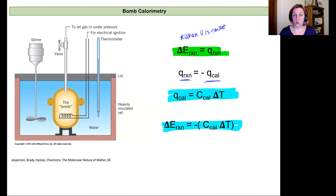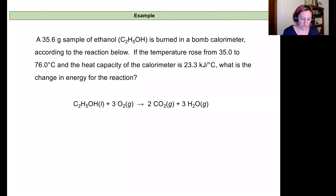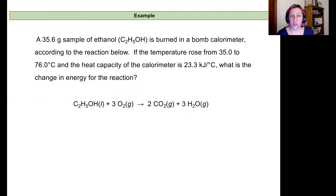So the internal energy change for the reaction equals the negative of the heat capacity of the calorimeter times the temperature change. Let's walk through an example. We have a 35.6 gram sample of ethanol burned in a bomb calorimeter. The ethanol plus oxygen gives carbon dioxide and water. The temperature rose from 35 to 76 degrees Celsius, and the heat capacity of the calorimeter was 23.3 kilojoules per degree Celsius. What is the change in energy for the reaction?